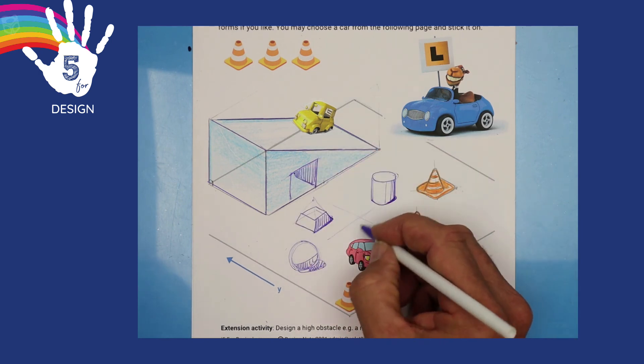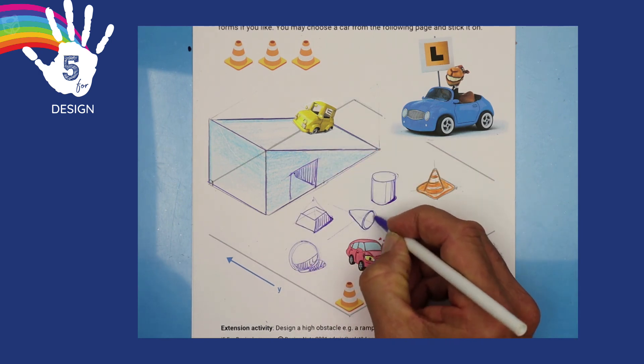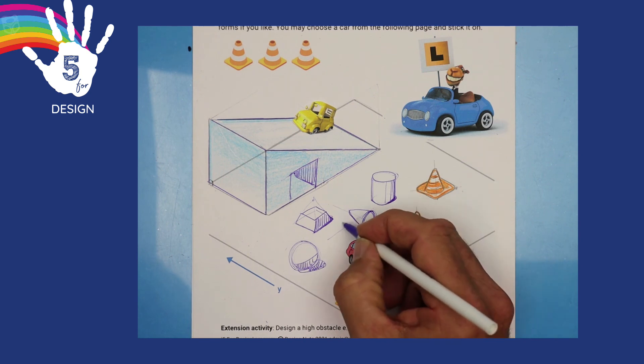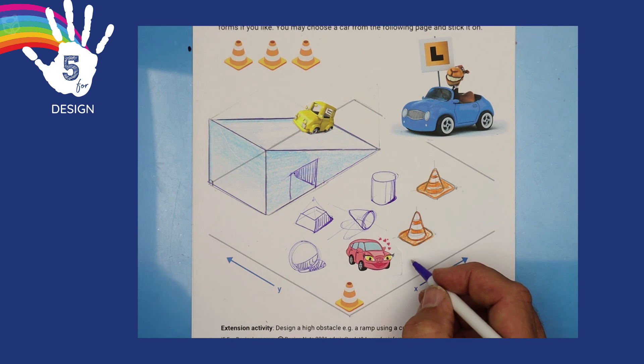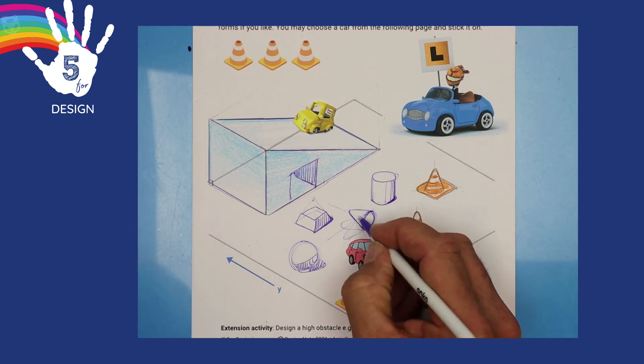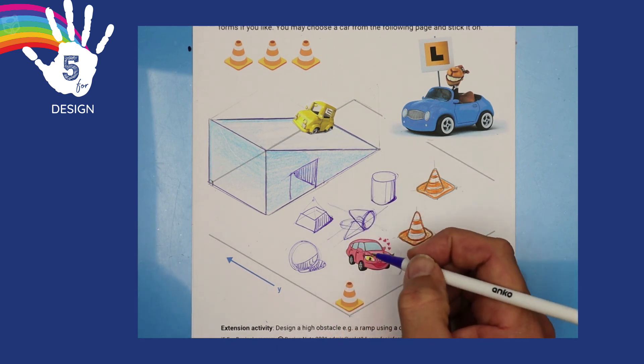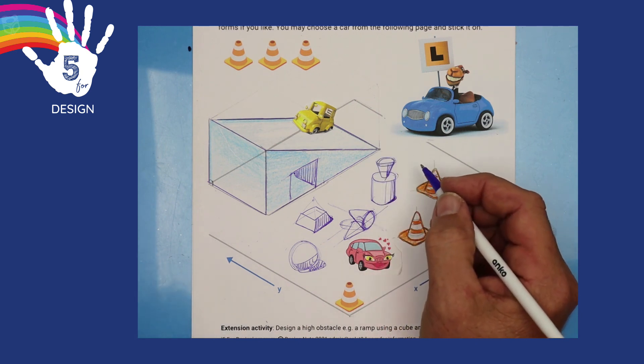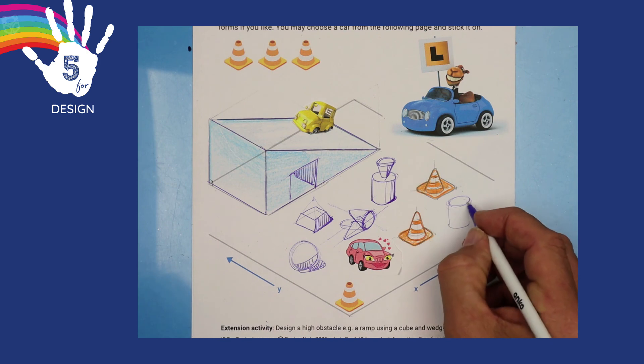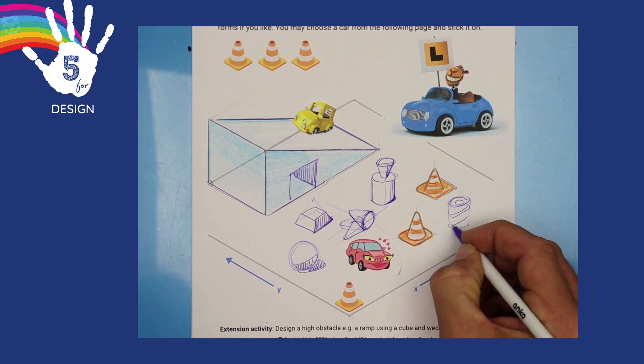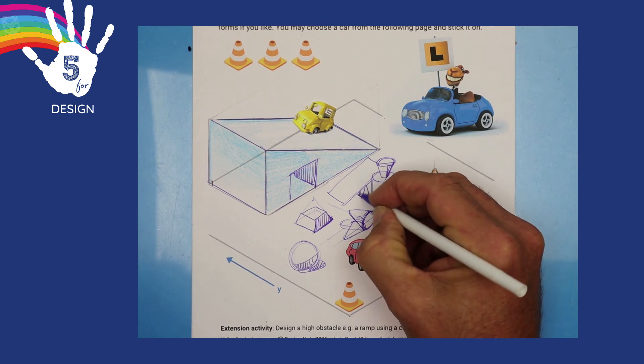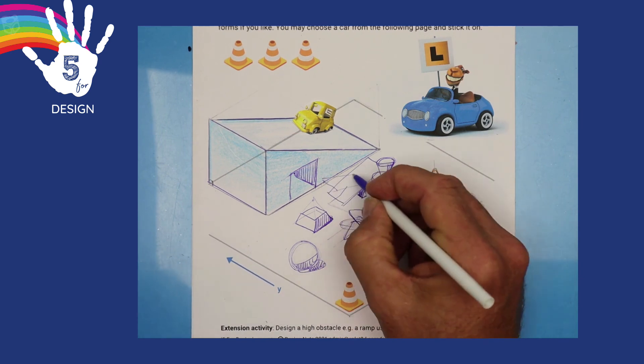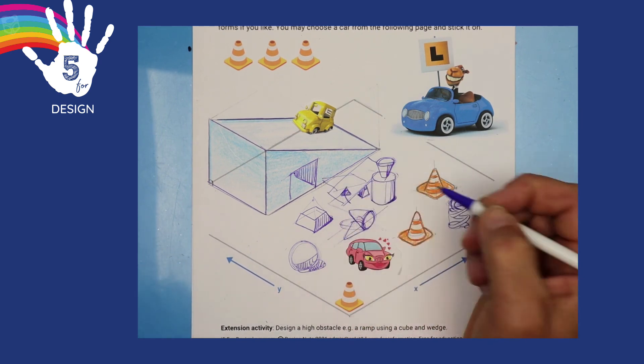And I'm thinking about having a cone there. Maybe it goes from the Y to the X axis. So maybe it swings around to catch the car. Perhaps the car bumps it around. All right. We could combine different objects together to form new designs. We could change the detail like a cylinder could become a spring. A rectangle could be a board that pivots or tips up when the car drives onto it.